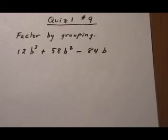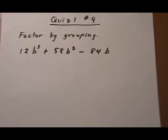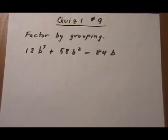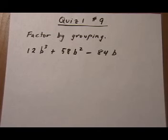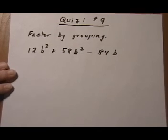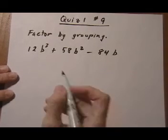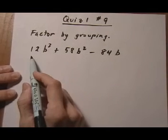And number 9 is factor by grouping. Now this is a trinomial with very large numbers. So factoring by grouping works pretty nice when you have large numbers and you're not really comfortable with the trial and error method. So as usual, let's pull out a GCF first.